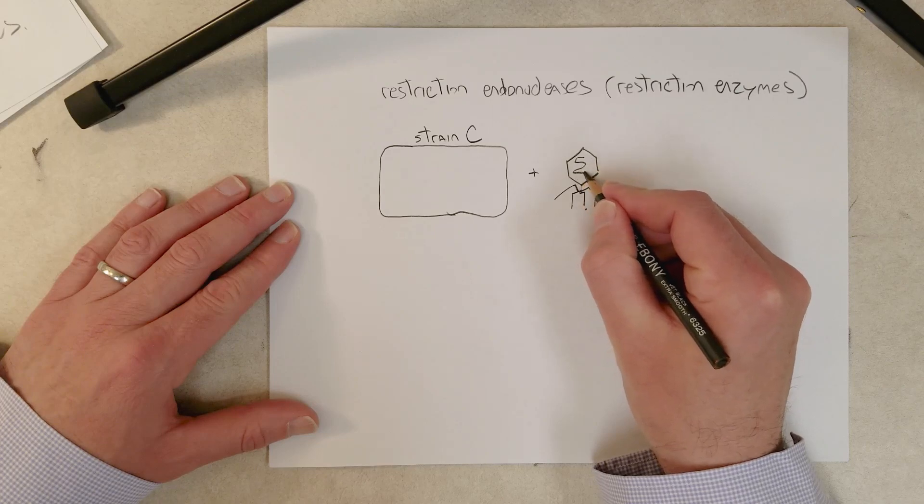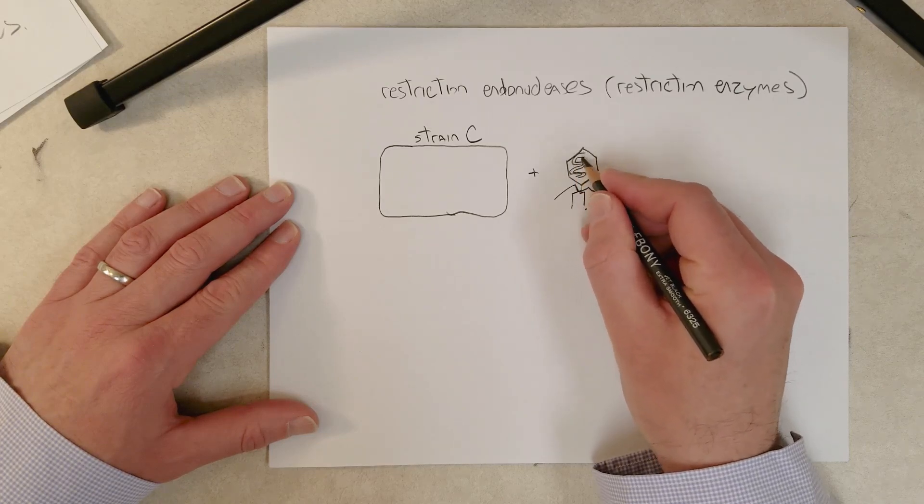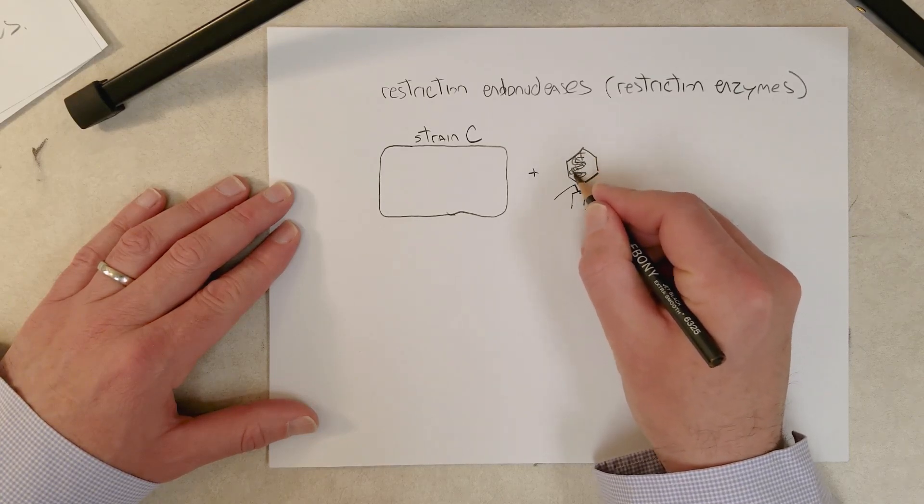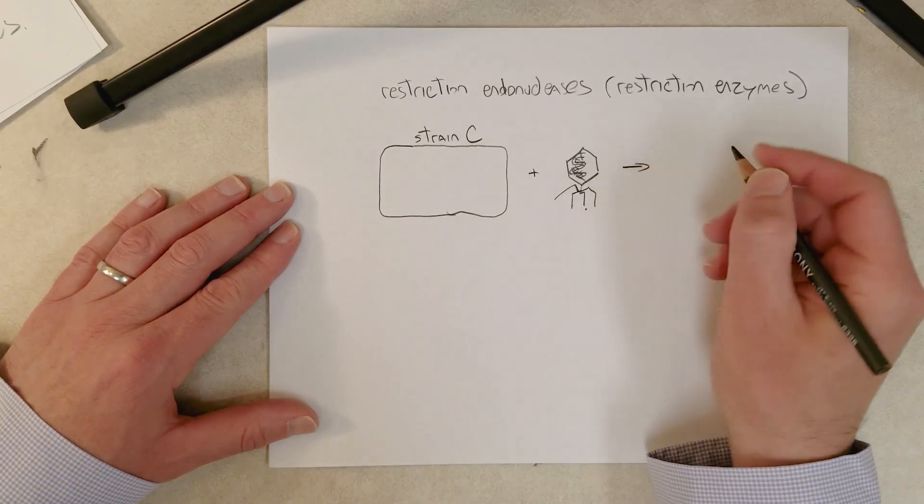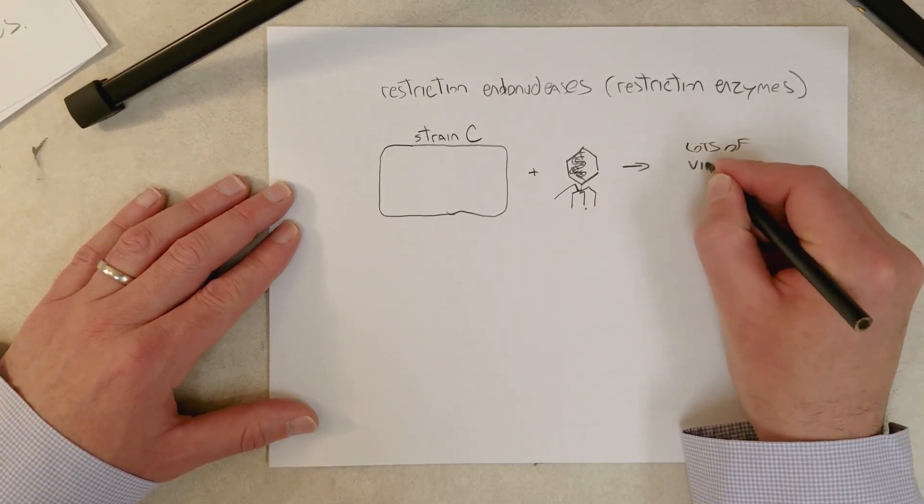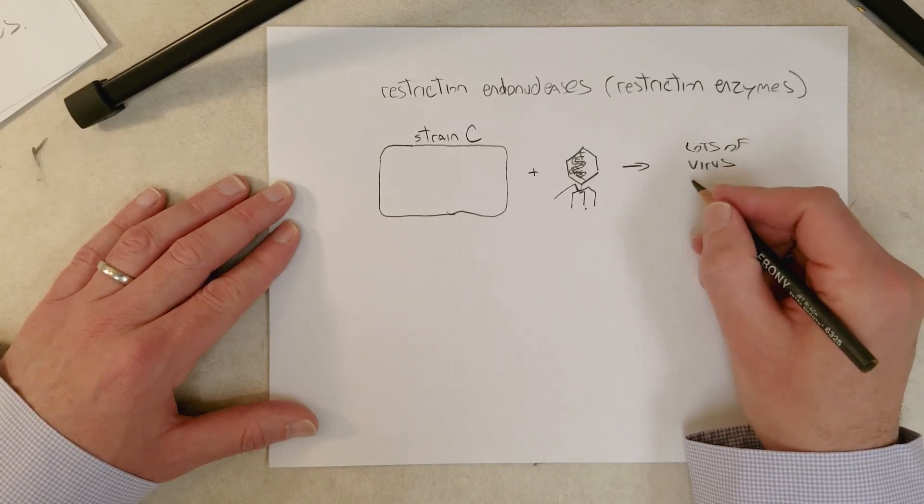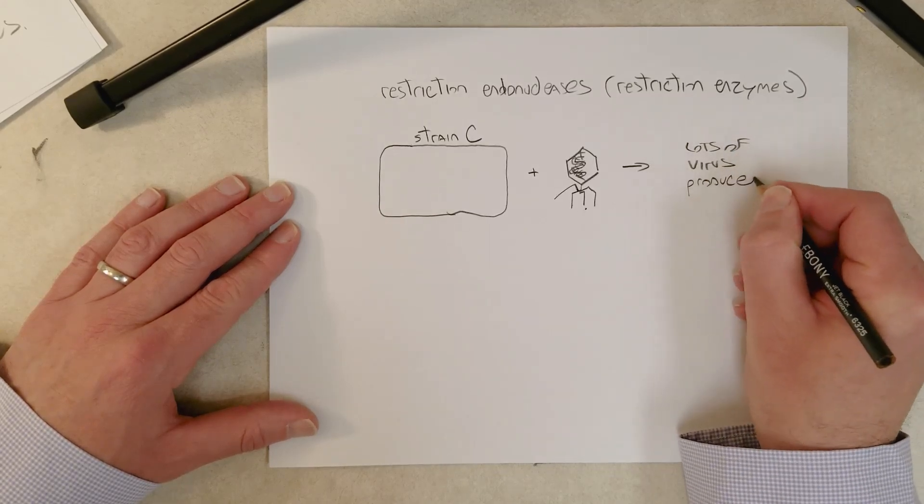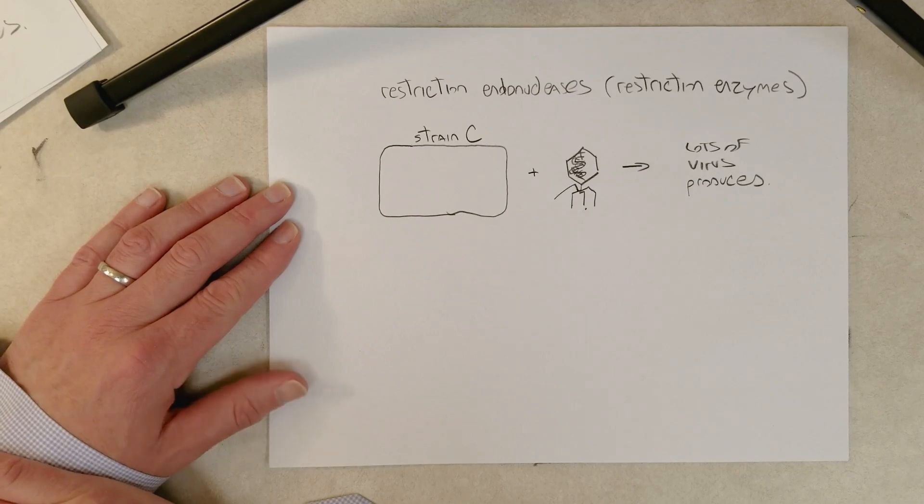And when they would infect strain C with the bacteriophage, the bacteriophage has a double-stranded DNA genome. I'll put the DNA in there. What they would get is lots of virus produced.